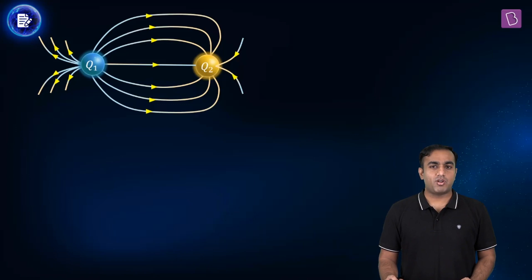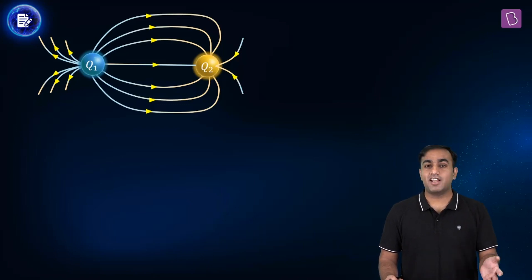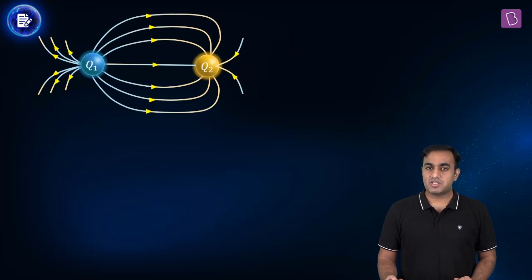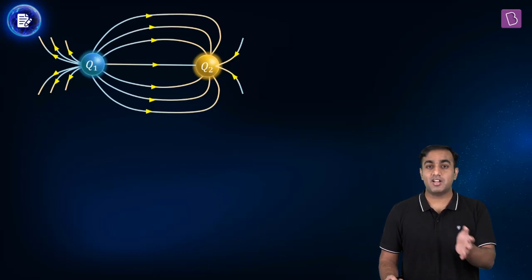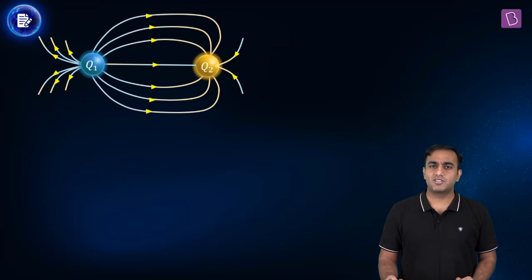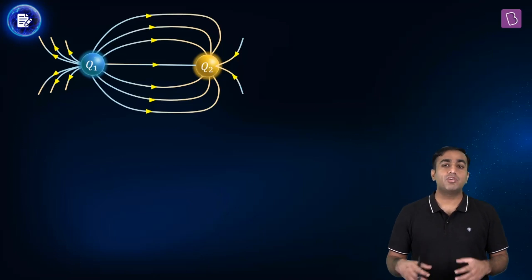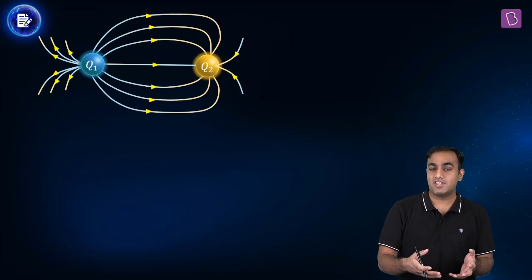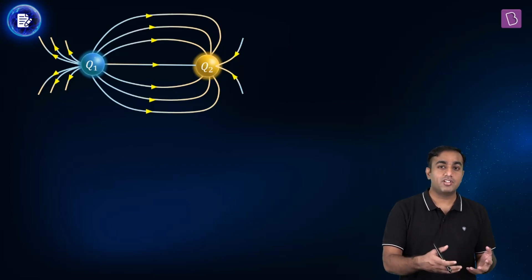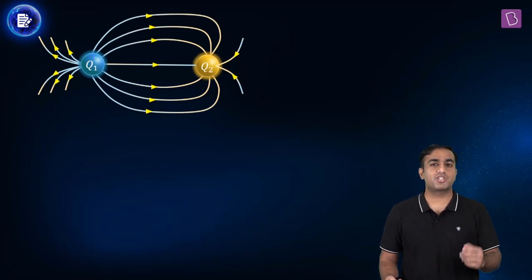We also need a norm on field lines originating from and ending at certain charges. In this model, field lines originate from a positive charge and end at a negative charge. Regarding the number of field lines, the more the magnitude of the charge, the more field lines associated with it — it is proportional.